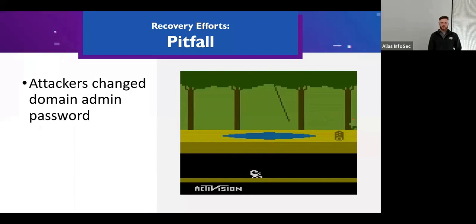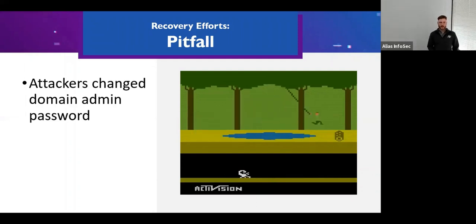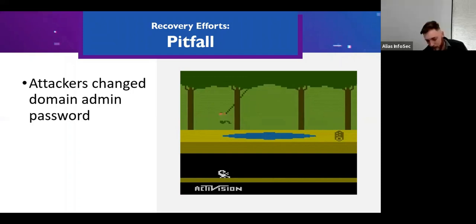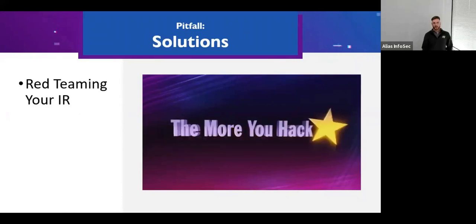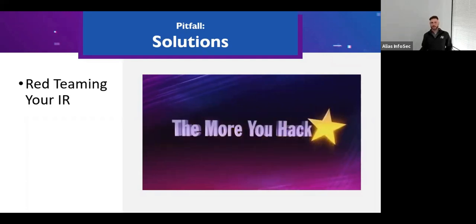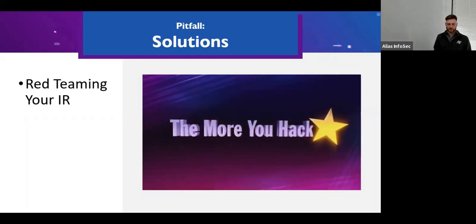A key pitfall: attackers used to get in, ransomware the environment, and leave — WannaCry is an example of that. Now attackers are full-blown APTs with C2 infrastructure. One of the first things I see in a memorable number of engagements is the attacker has changed the domain admin password. This is where our team differs from most incident response teams — we're security engineers and pentesters first, so we treat it like attacker versus attacker instead of attacker versus defender.